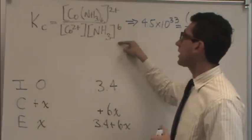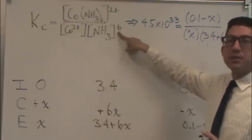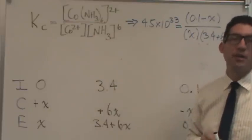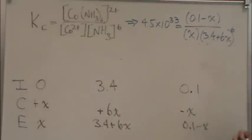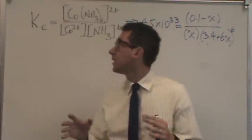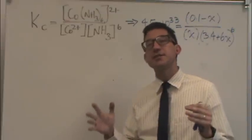So Kc is going to be products over reactants. Notice that the NH3 concentration will be raised to the 6th because the coefficient that was on the NH3. So what happens is I just plug in the E line straight up right in here, and then I get that 6 right there.